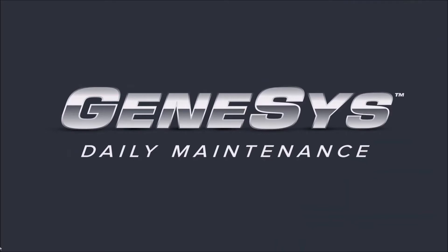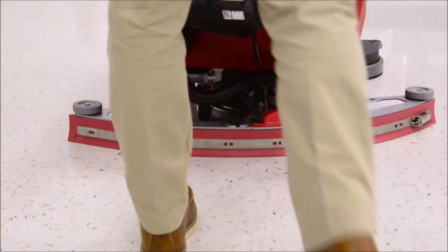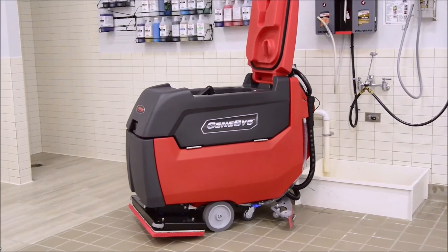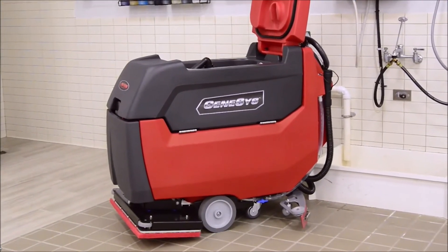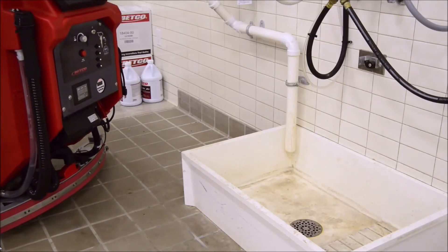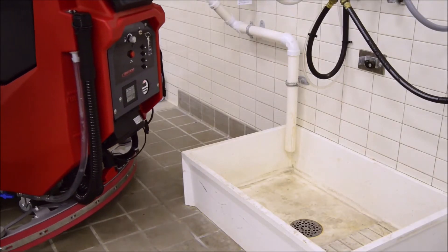This last section outlines the suggested daily maintenance procedures. Whether you are partially done with a job and your solution tank is empty, or you have finished your job, the Genesis recovery tank needs to be emptied and maintained. The first step to emptying the machine is to position the rear of the machine near the approved drain as shown here.